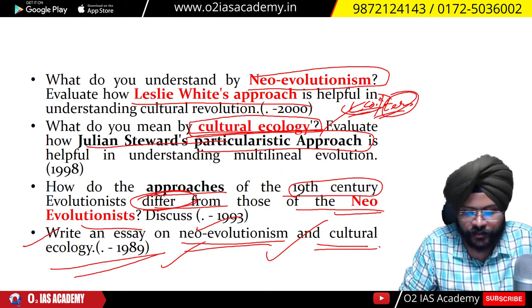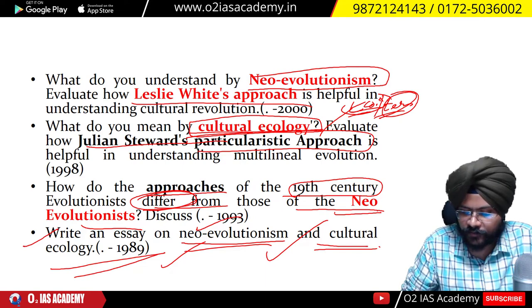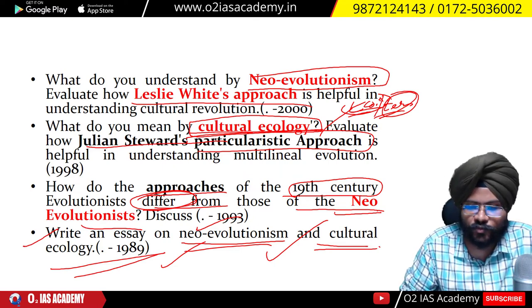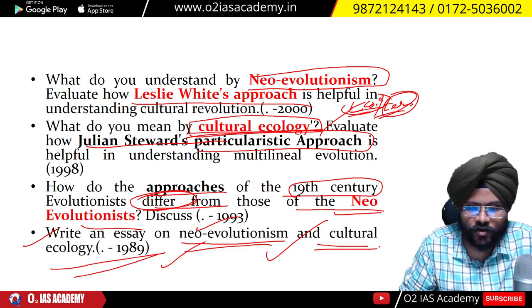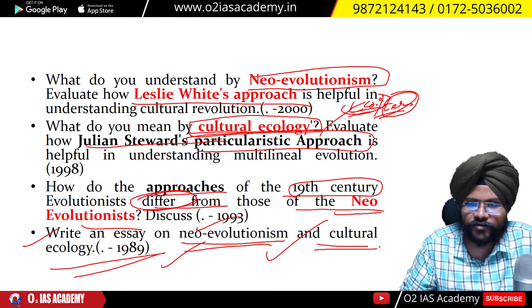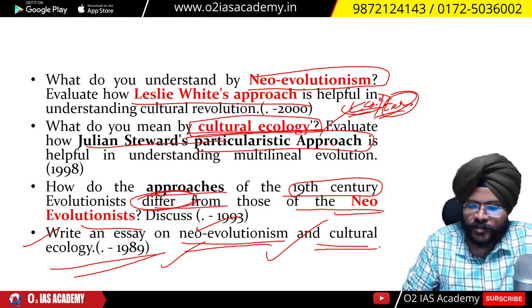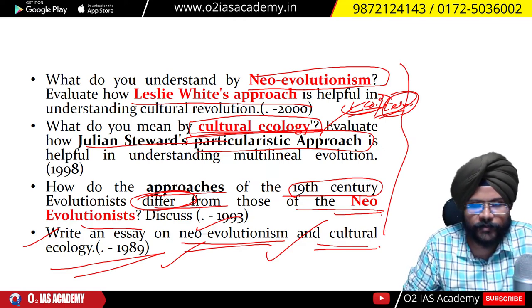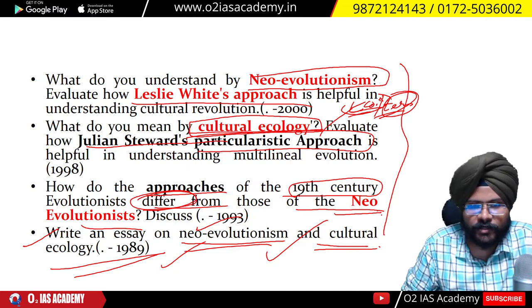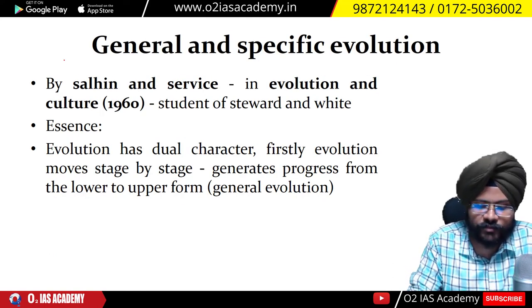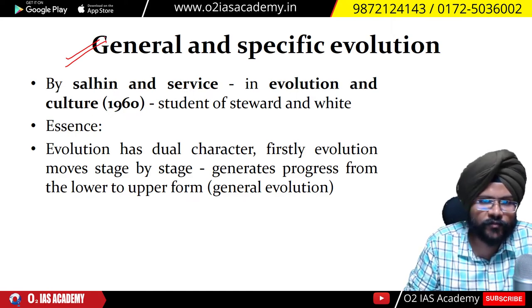Evolution can never move on just one line. Then again, the universal school of new evolutionism says that all cultures of the world try to advance their technological development — they want to extract more energy and increase their environmental exploitation. So two different schools of thought formed. Now to reconcile both, we get the concept of general and specific evolution.